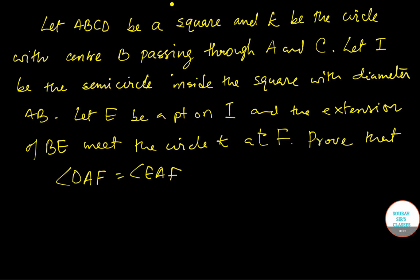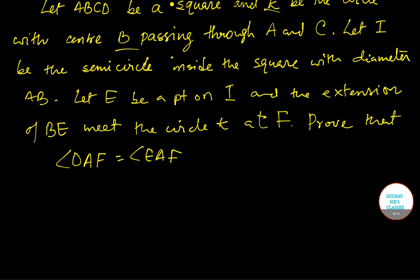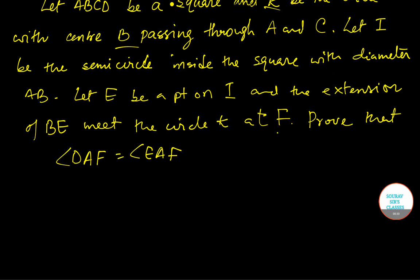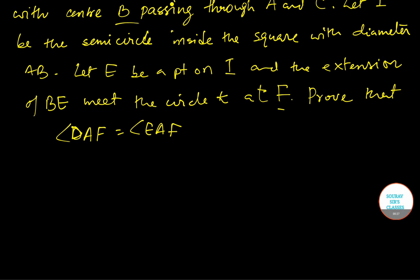Hello students, welcome to share of size classes. Today I will be talking about RMO geometry problems. The question is: let ABCD be a square, K be the circle with center B passing through A and C, I be the semicircle inside the square with diameter AB, E be a point on I, and the extension of BE meet circle K at F. We need to prove that angle DAF equals angle EAF.